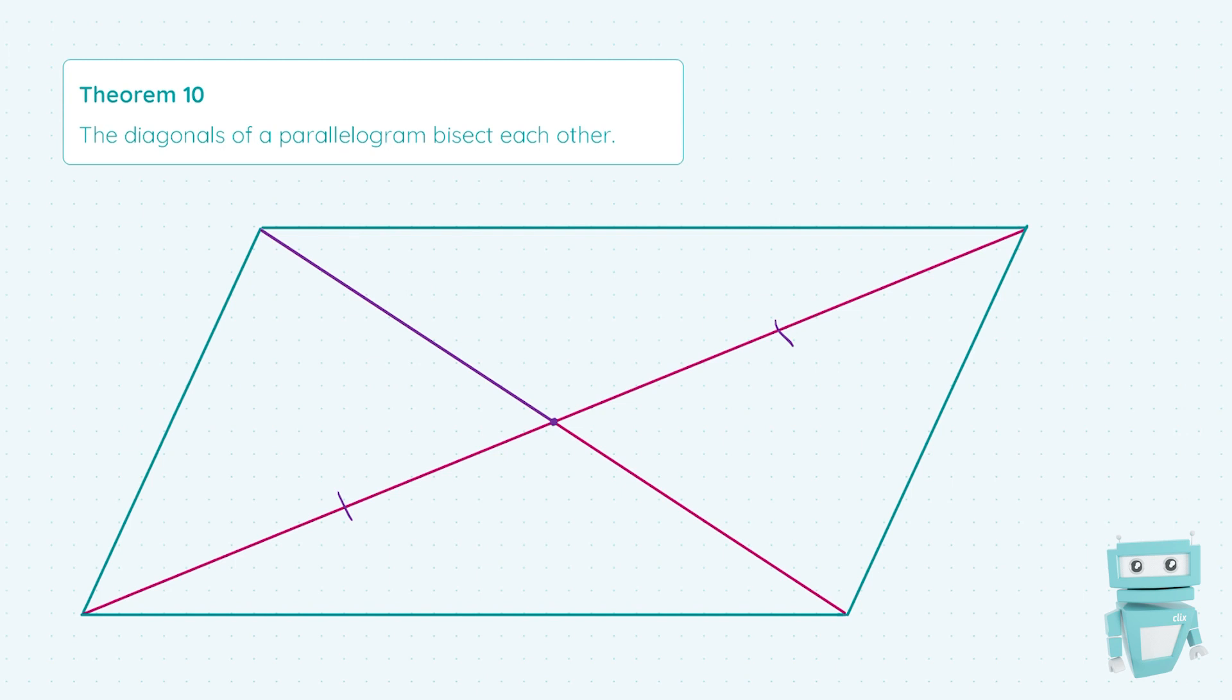Or if we just take this line that runs from the top left corner to the middle and we say that this is equal to 5 centimeters, then we know that the pink line running from the middle to the bottom right is also 5 centimeters long because the diagonal in its entirety running from the top left to the bottom right is bisected or cut in half.